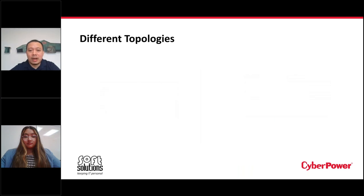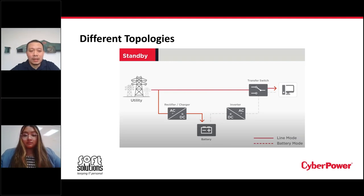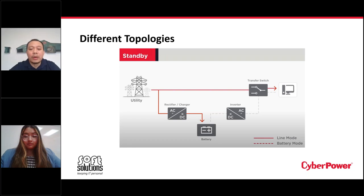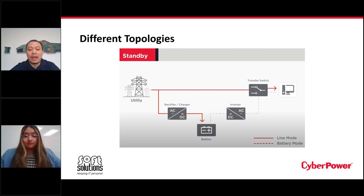Now touching on the different types of topologies that CyberPower has. UPS systems have different topologies to safeguard devices against different combinations of power events. The first topology is standby: a standby UPS allows equipment to run off utility power and provides battery charging until it detects a problem such as power failure, sags, or surges. When this occurs, the UPS switches to battery mode. Standby is very cost effective and suitable for home and small office applications.